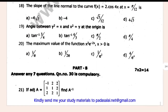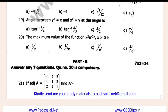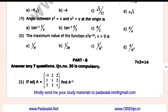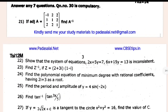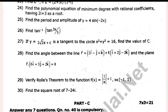Questions 19, 20 — 1 mark. 2 mark, Part B: 9, 10, 11 — 1 mark. 2 mark, 2 mark, 2 mark, 2 mark, 3 mark, 3 mark, 3 mark, 4 mark, 4 mark, 5 mark, 5 mark, 5 mark, 5 mark, 5 mark.